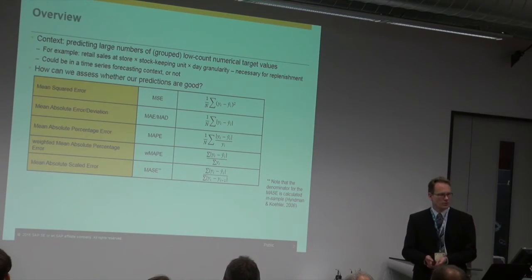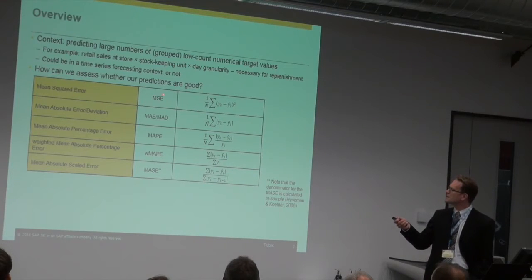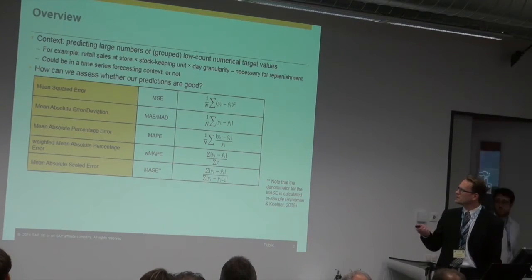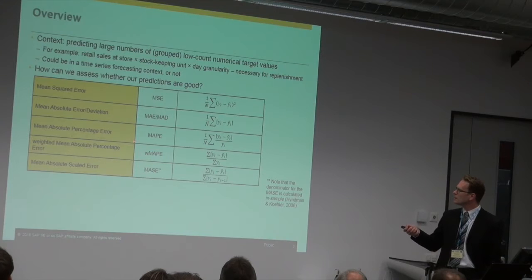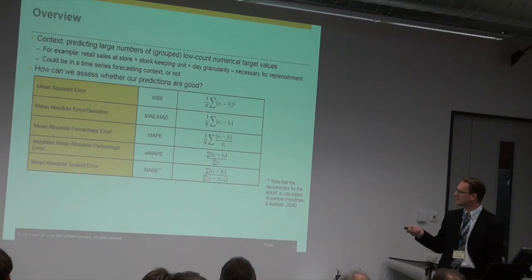The question is: how do we assess whether such a prediction or forecast is any good? The first thing that comes to mind is to look at point forecast accuracy measures. There's mean squared error (MSE) — we have a realization Y_i and a forecast Y_i hat, take the squared difference, sum it, and divide by the number of occurrences. Mean absolute error (MAE) is essentially the same without the square term. We can also do percentages, a weighted mean absolute percentage error, or a mean absolute scaled error, which is common in the forecasting literature.